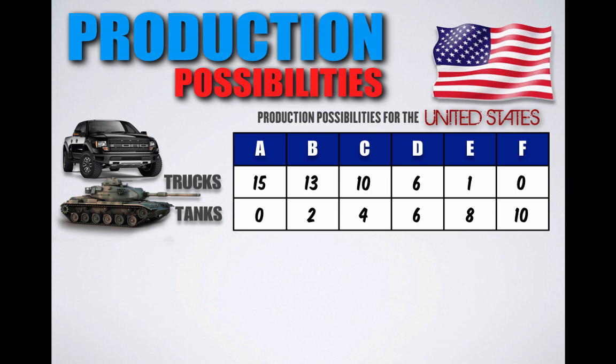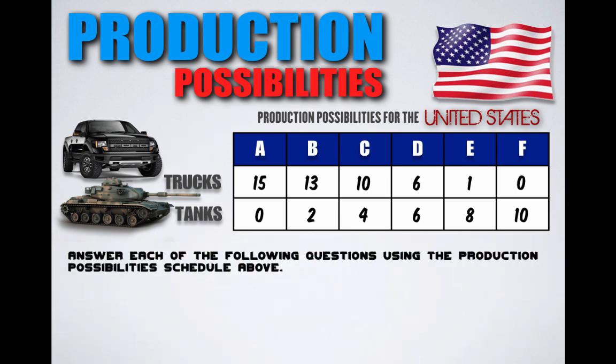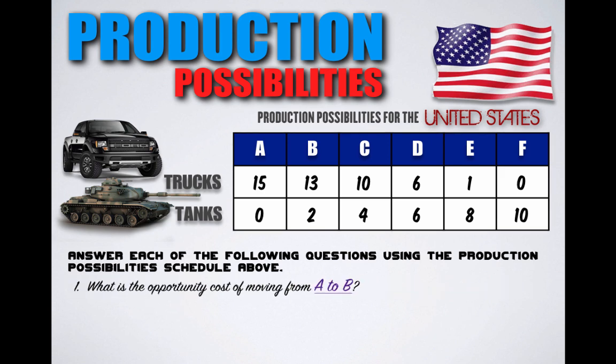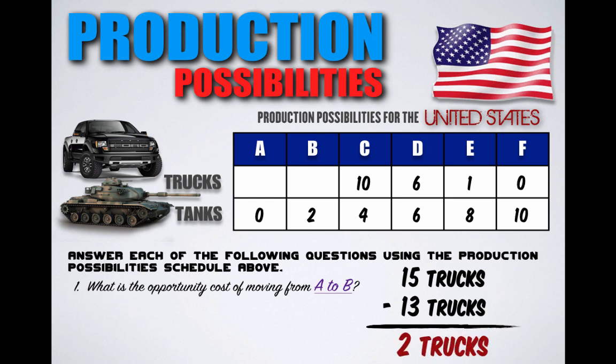Do you recognize this dilemma? This is a classic guns or butter dilemma — you have consumer goods, trucks, and you have military goods, tanks. The United States with its given resources can only produce these two goods in various combinations listed. Ceteris Paribus, question number one: what is the opportunity cost of moving from combination A to combination B? When moving from combination A to combination B, the United States is decreasing its truck production from 15 trucks to 13 trucks, so the opportunity cost is two trucks.